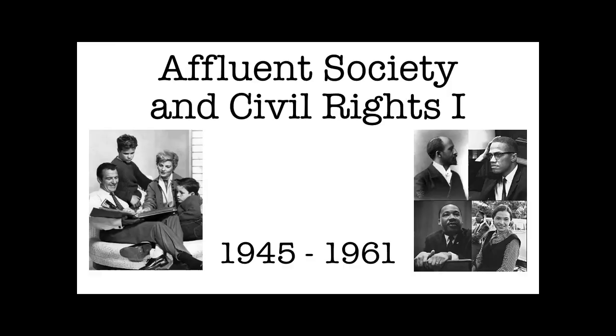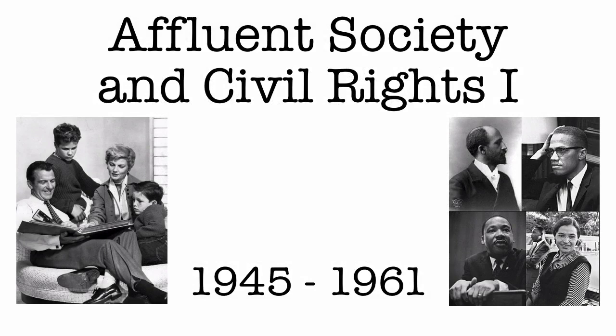From about 1945 to about 1961, the United States is seen by many historians as a society with affluence. We're going to talk about what that means today, and we're also going to talk about the first phase of the civil rights movement.